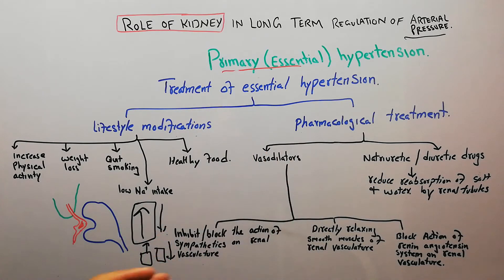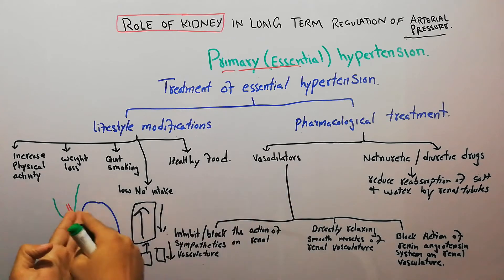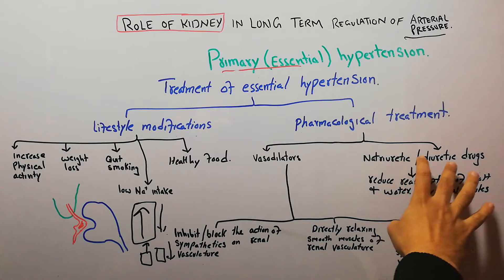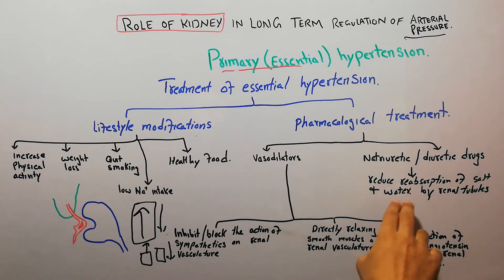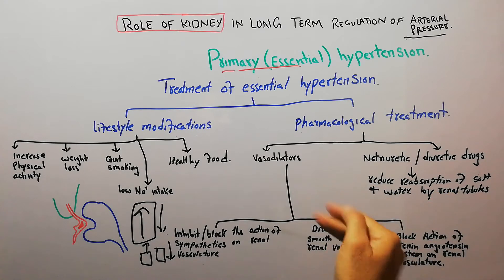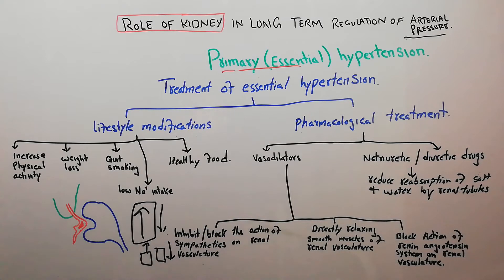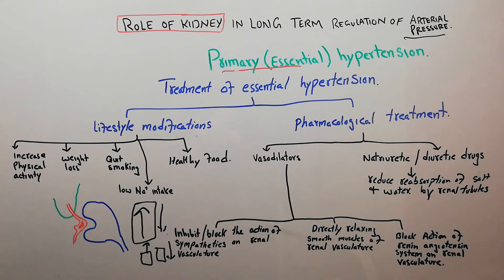Vasodilator drugs dilate the blood vessels of the kidneys. Diuretic or natriuretic drugs reduce the reabsorption of salt and water by the renal tubules and help increase removal of salt and water from the body, which decreases cardiac output, decreases peripheral resistance, and decreases hypertension or arterial pressure.